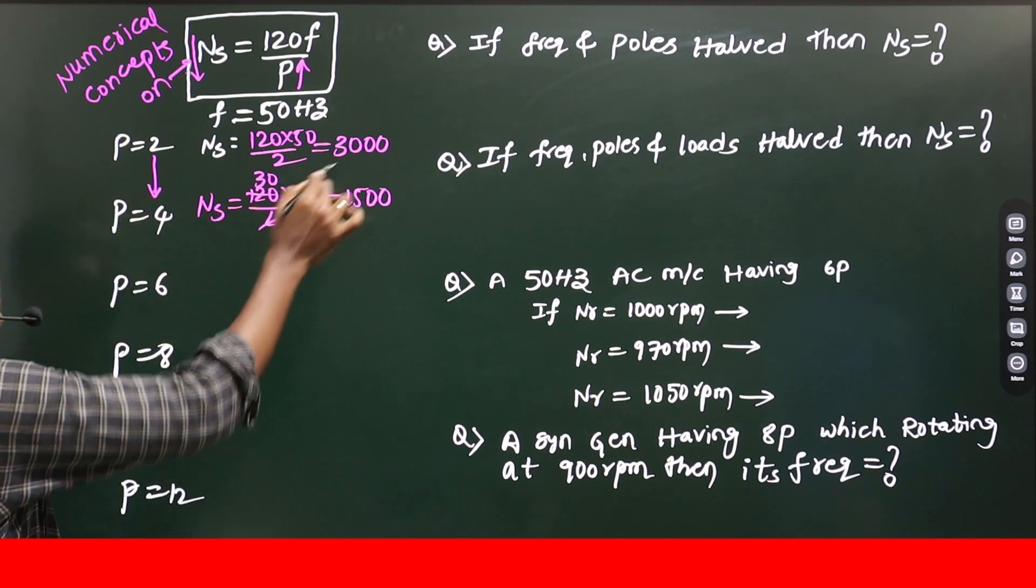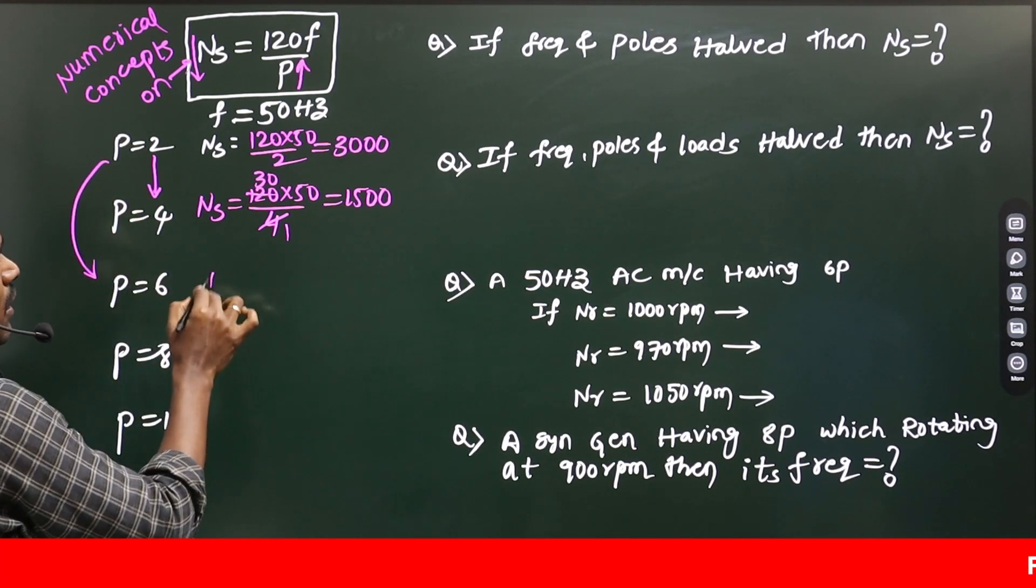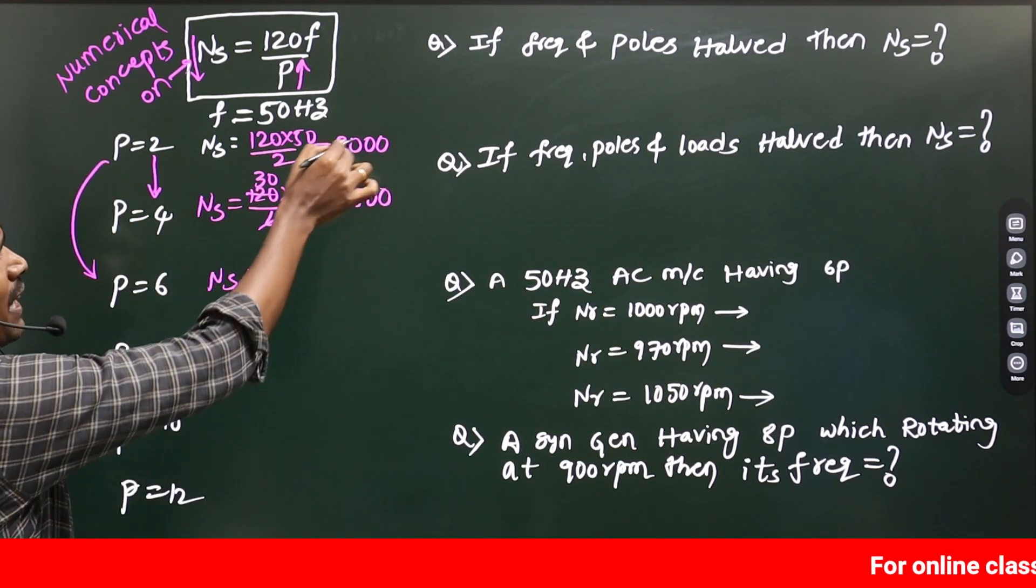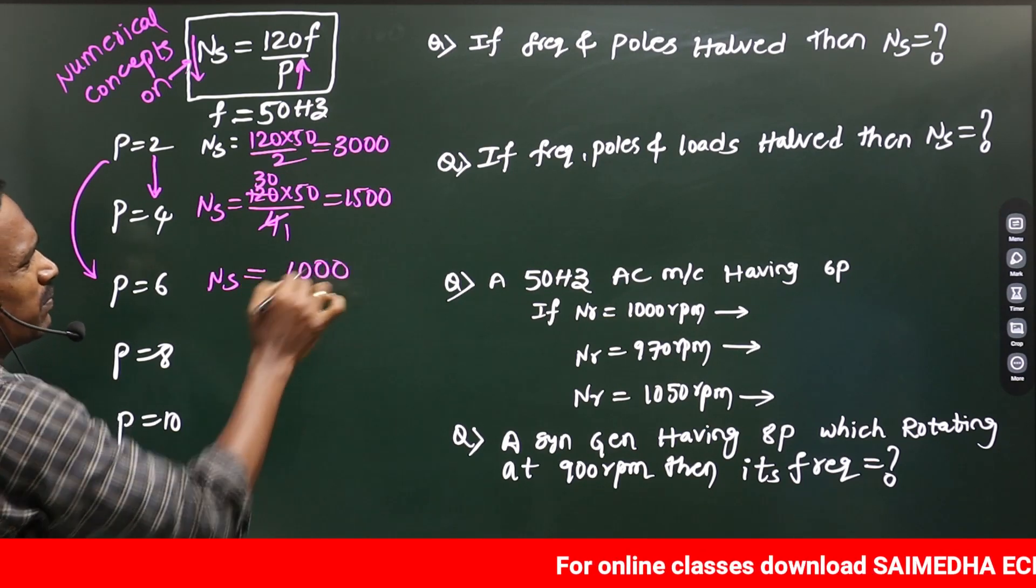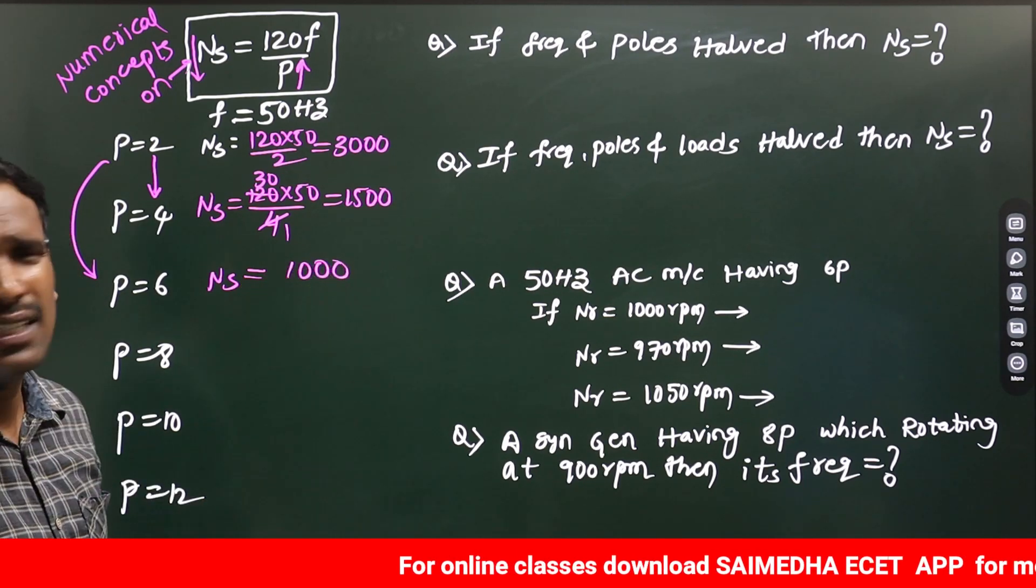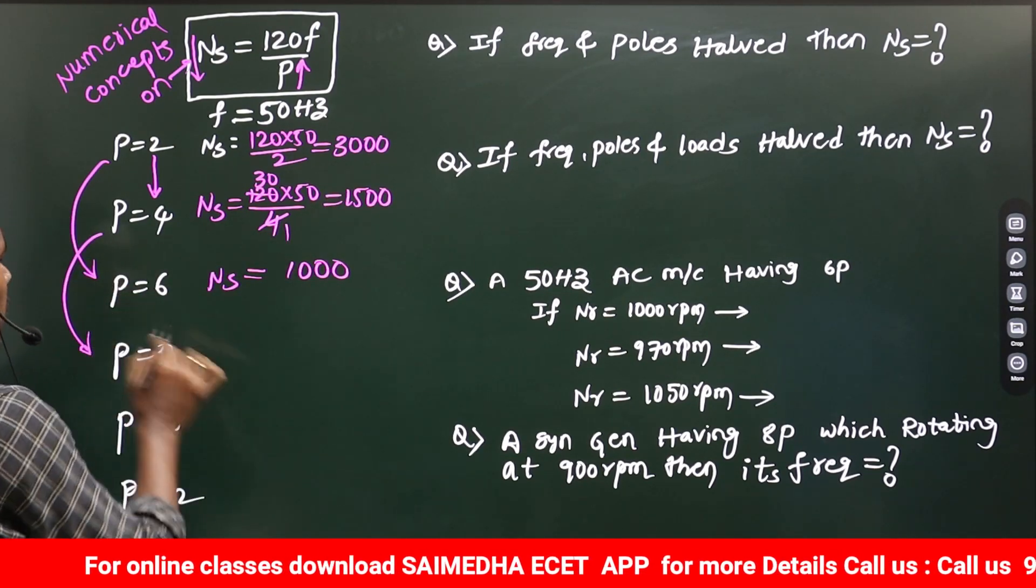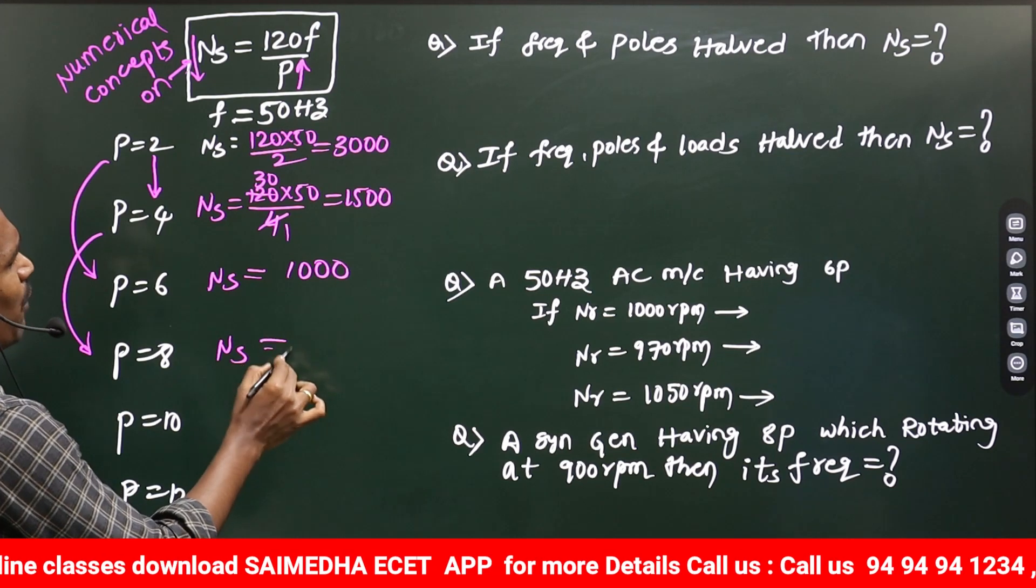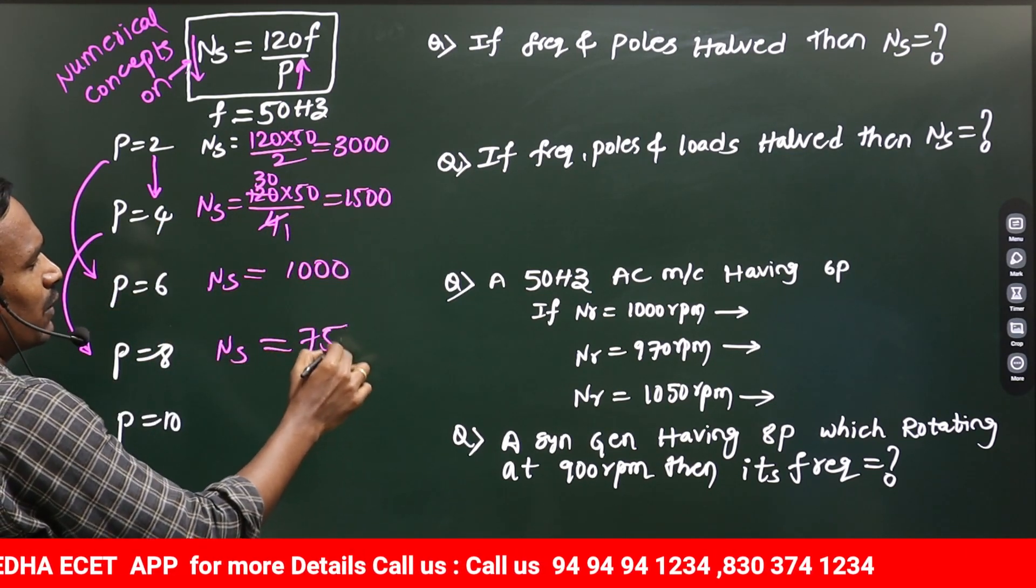If the number of poles doubled, speed halved. If the number of poles triple, then the speed 1 by 3, one-third times of 3000, 1000 RPM. We can do it like that. Otherwise you can calculate. If the number of poles are doubled, the synchronous speed halved from 4 pole to 8 pole, 1500 to 750.